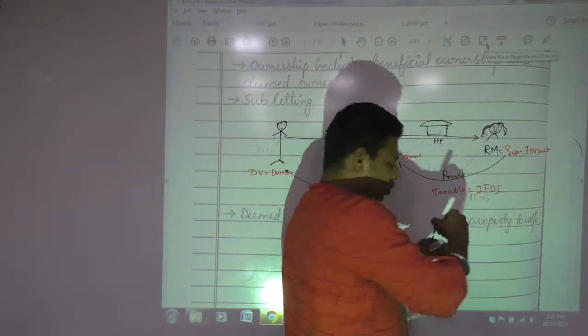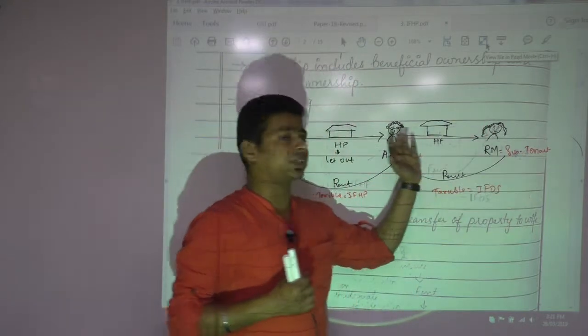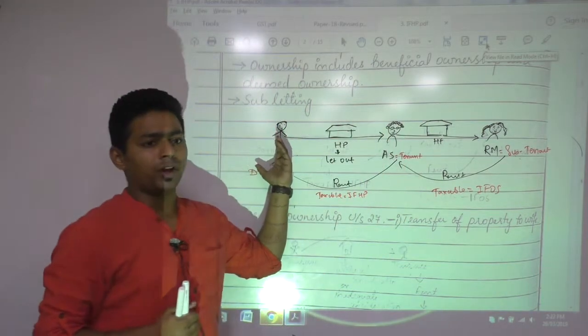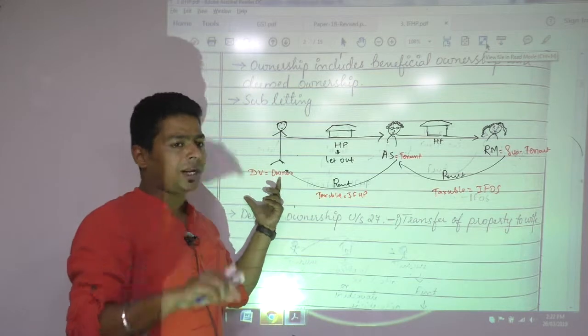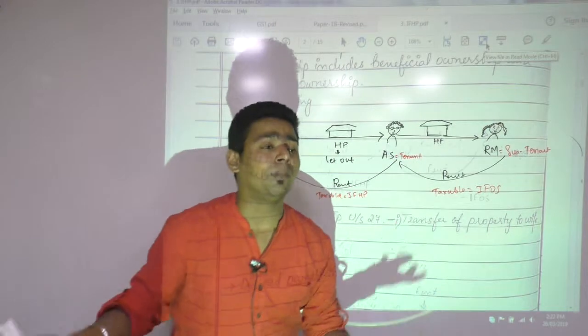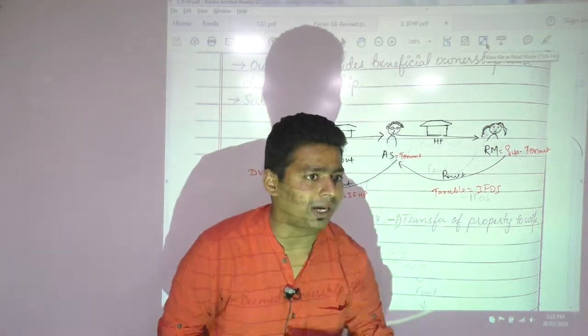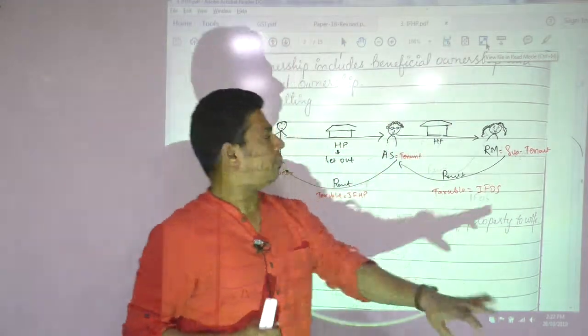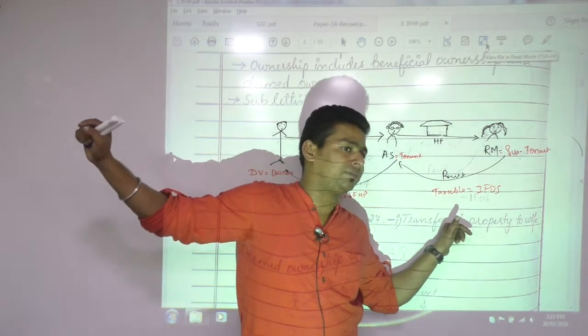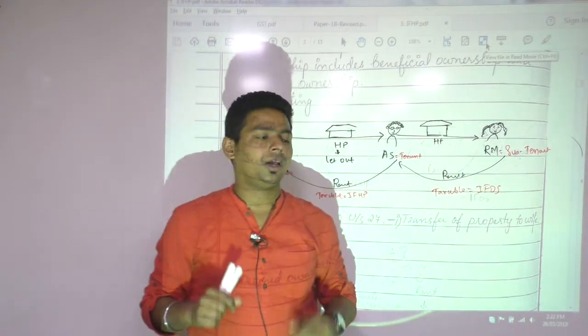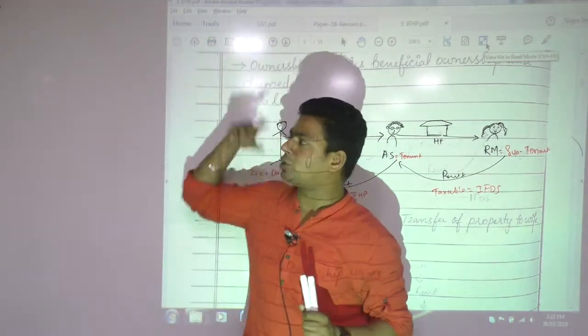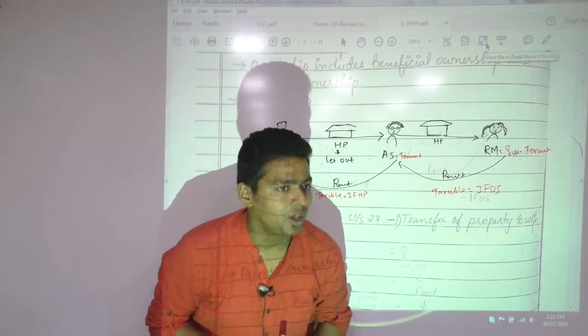Now one doubt you should ask me: Sir, if Radika is giving 15,000 rent to tenant and tenant is giving 12,000 rent to owner - owner has already paid tax on 12,000 and tenant is also paying tax on 15,000. Isn't this double taxation? There won't be double taxation because the tenant will get a deduction for the rent that he is paying. So he is earning 15,000, and out of 15,000 he is paying 12,000.